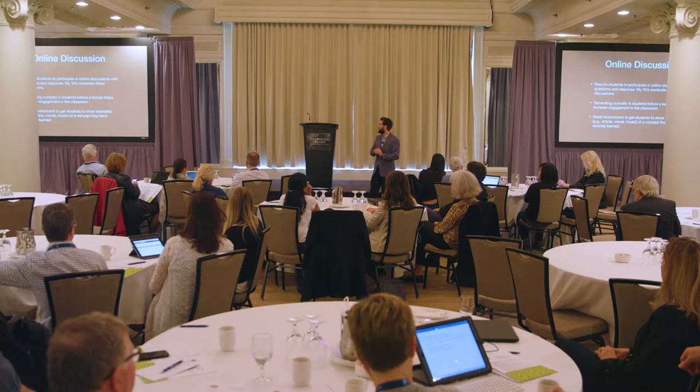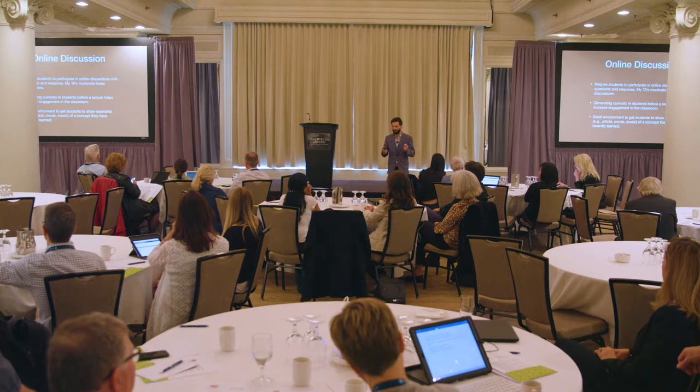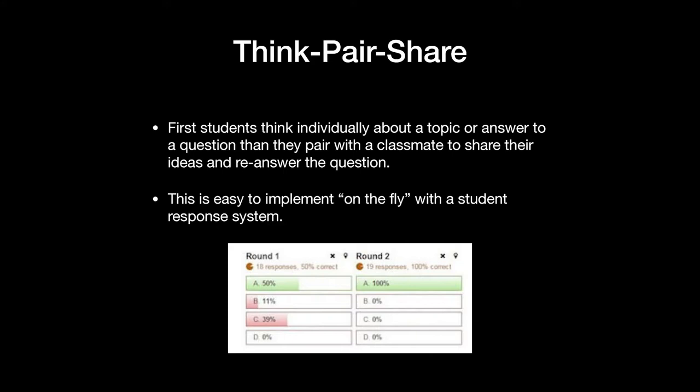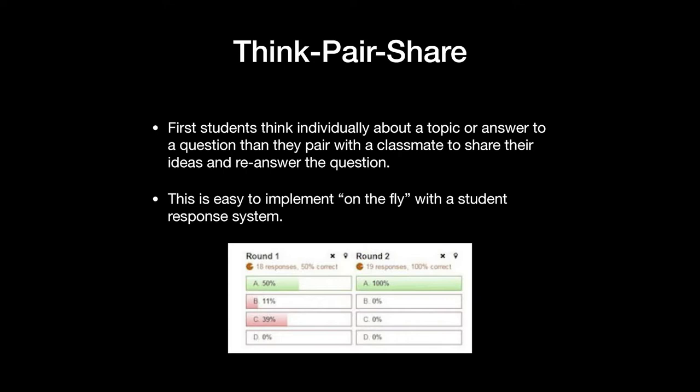The next resource is think-pair-share, which we actually just experienced at the start of Fiona's previous presentation — she asked us where the mask goes, we answered it, most of us got it wrong, and then we had to talk to our neighbors. This is really how I use think-pair-share activities in my class. The cool thing is I never plan in advance when I'm going to use one — I just go to class with three or four questions on my student response system like Learning Catalytics. If I get a distribution where some pick the wrong answer — say 50% got it right but 39% didn't — I'll say, 'That's an interesting distribution, let's try this again.' It's really easy to implement if you're already using a student response system.